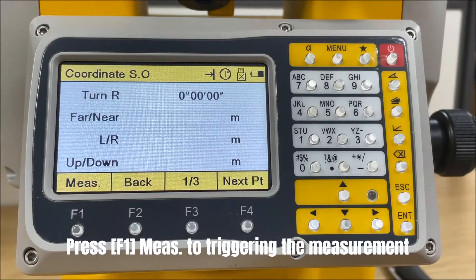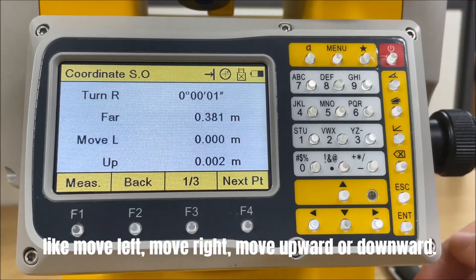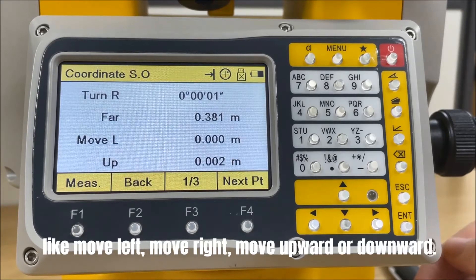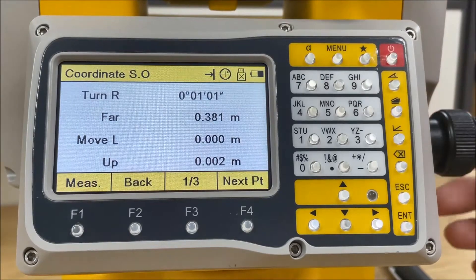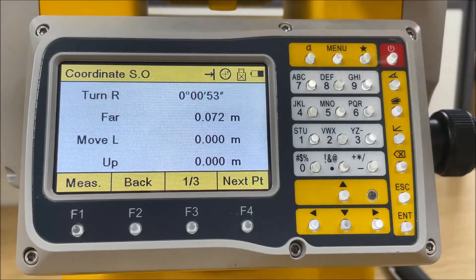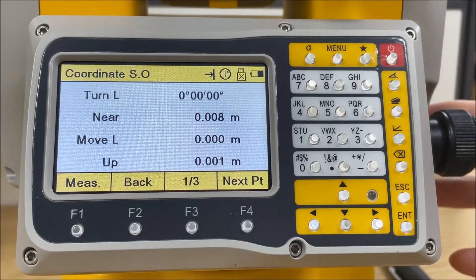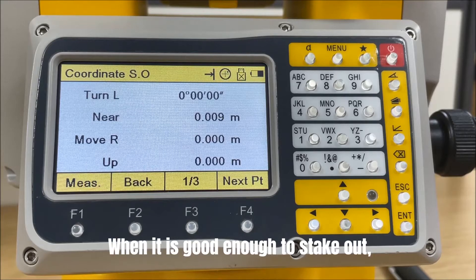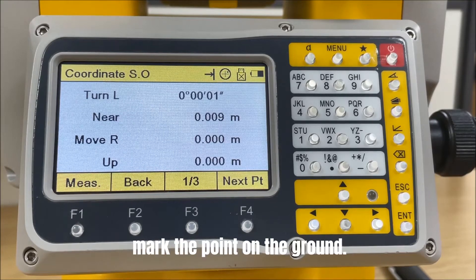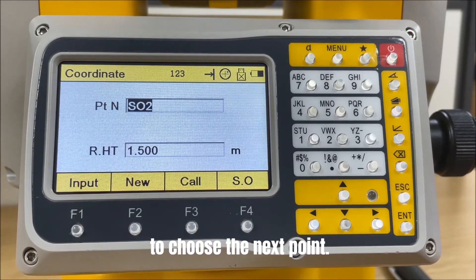Press F1 to trigger the measurement and find the point on sight based on the guidance points, like move left, move right, move upward or downward. When it is good enough to stake out, mark the point on the ground. It takes us back to the stake out page to choose the next point.